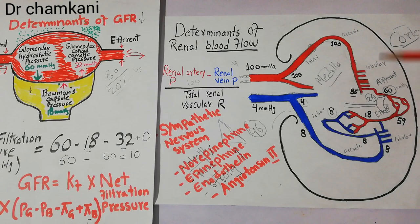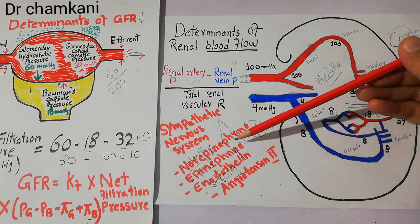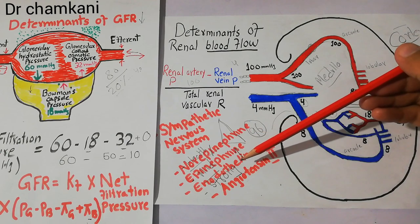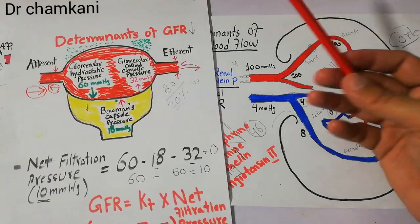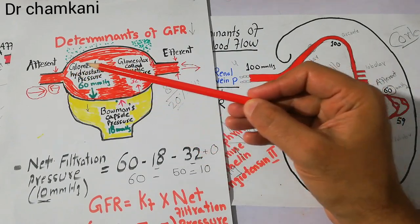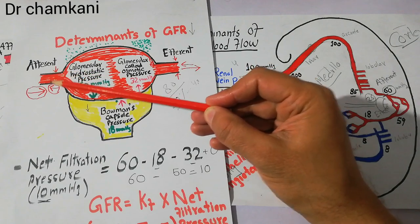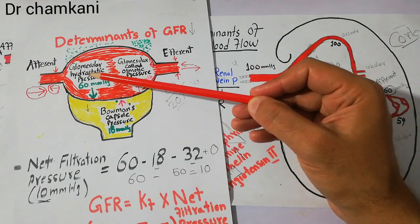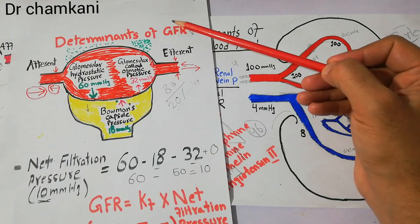When sympathetic nervous system activation occurs, or when norepinephrine, epinephrine, or endothelin are released, they constrict both the afferent and efferent arteriole, decreasing the GFR. Blood enters the glomerular capillaries from the afferent arteriole, and if constriction occurs and resistance to blood flow increases, the glomerular hydrostatic pressure falls, filtration drops, and GFR decreases.